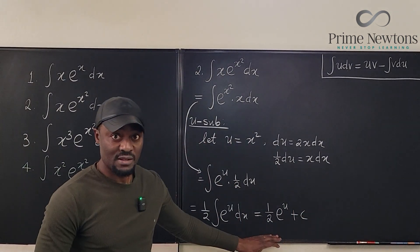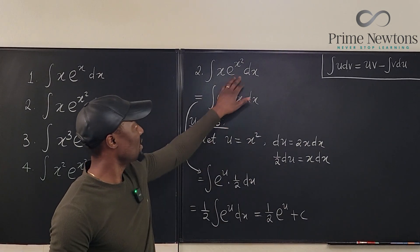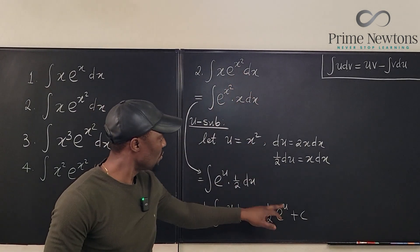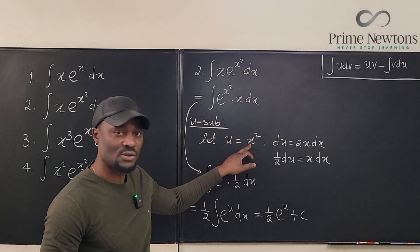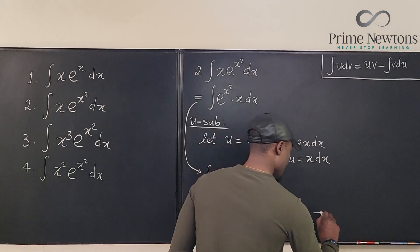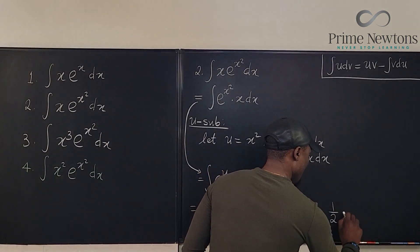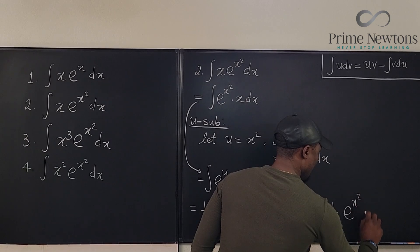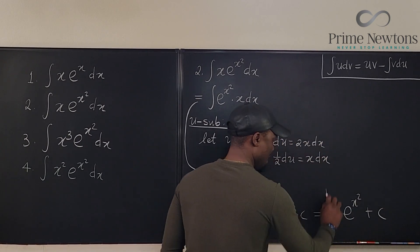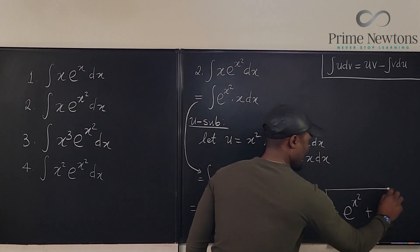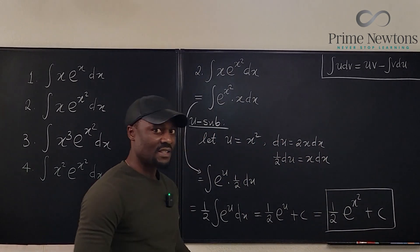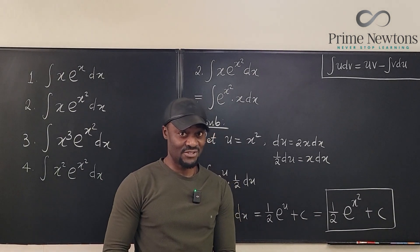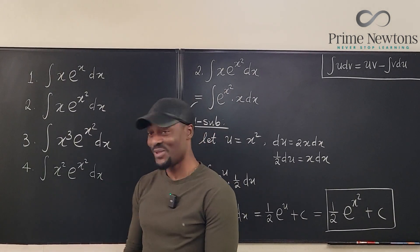Don't leave the answer in terms of u — remember the problem was in terms of x, so replace u with x². The final answer is one half·e^(x²) plus C. That's the second integral done.